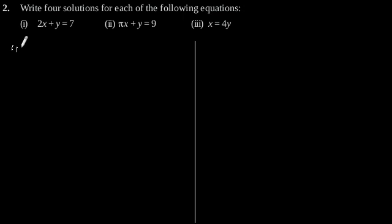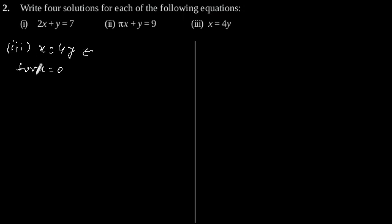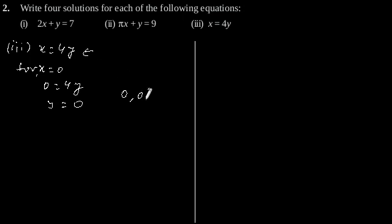The third equation is x is equal to 4y. For this equation, let's put x is equal to 0. For x is equal to 0, we will get y is equal to 0. So the first solution for this equation is (0, 0).